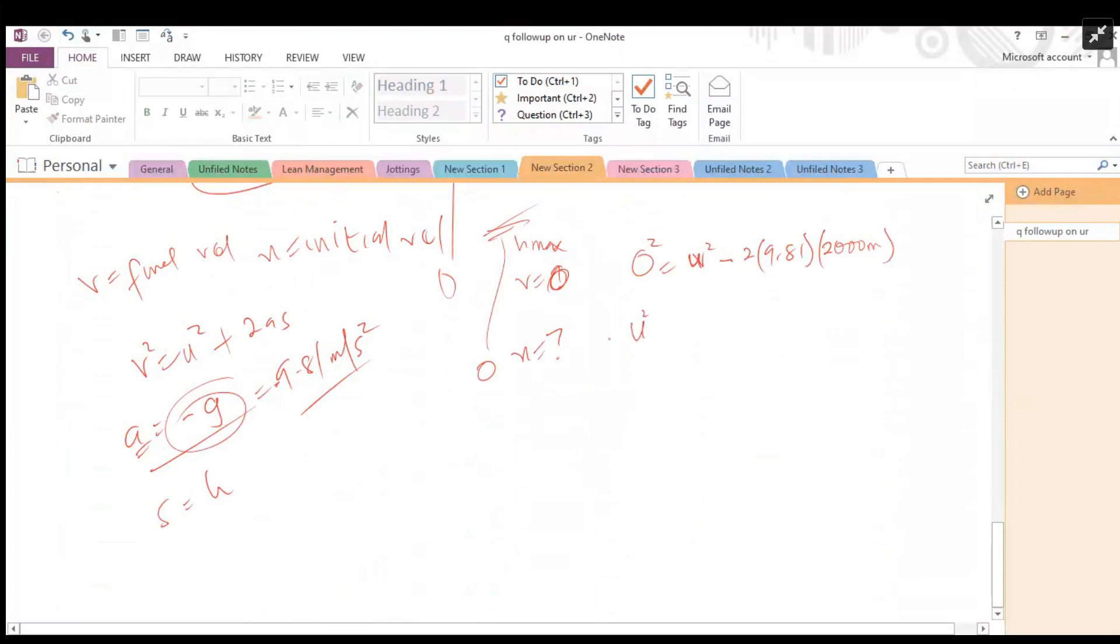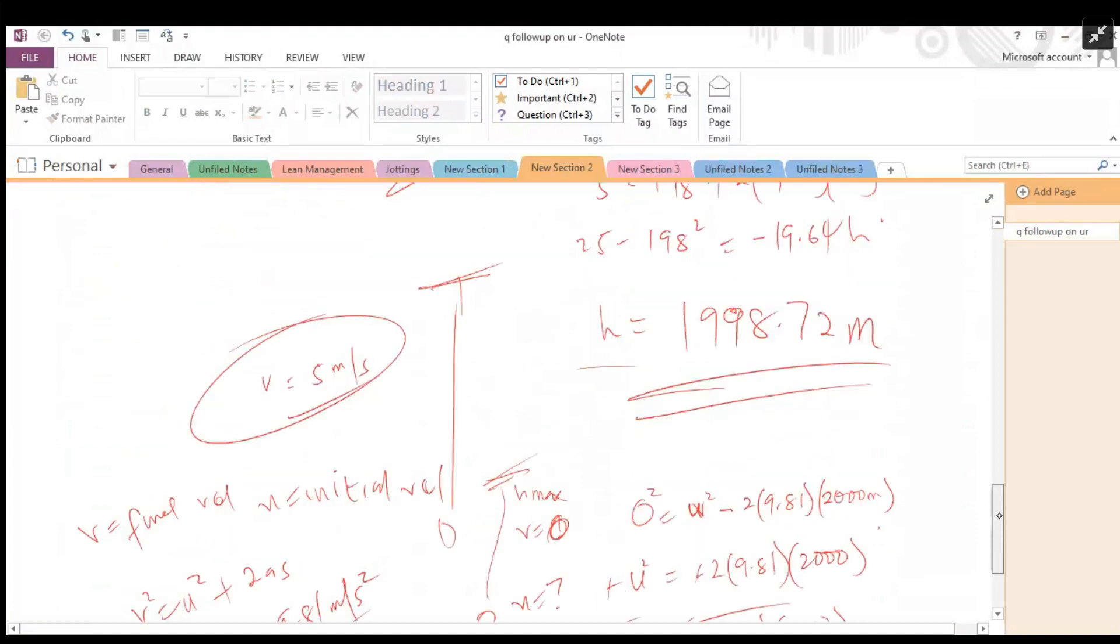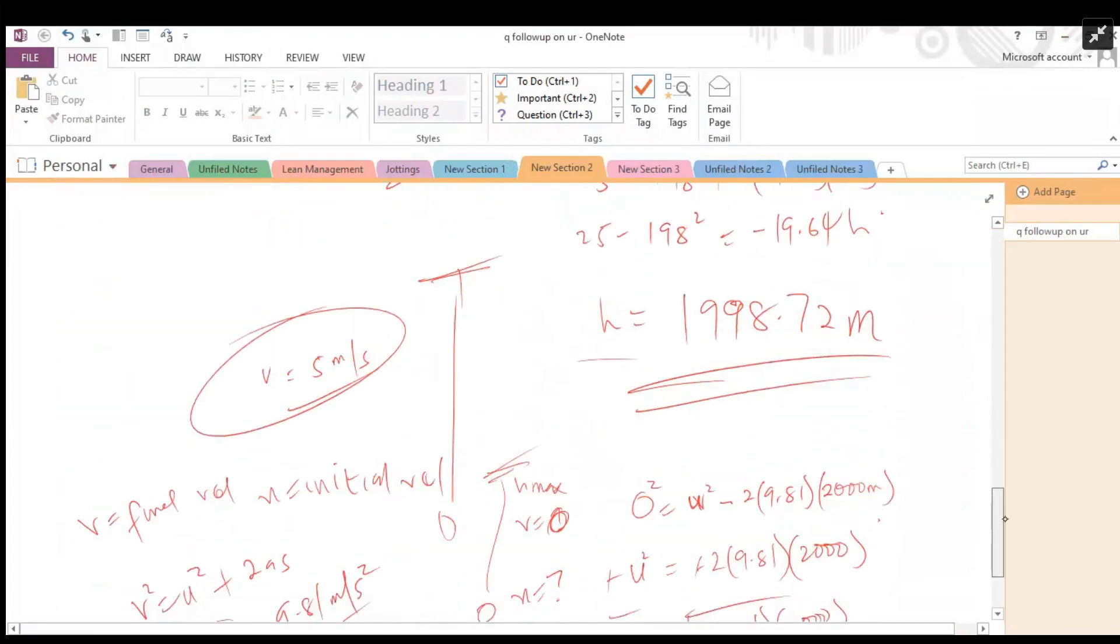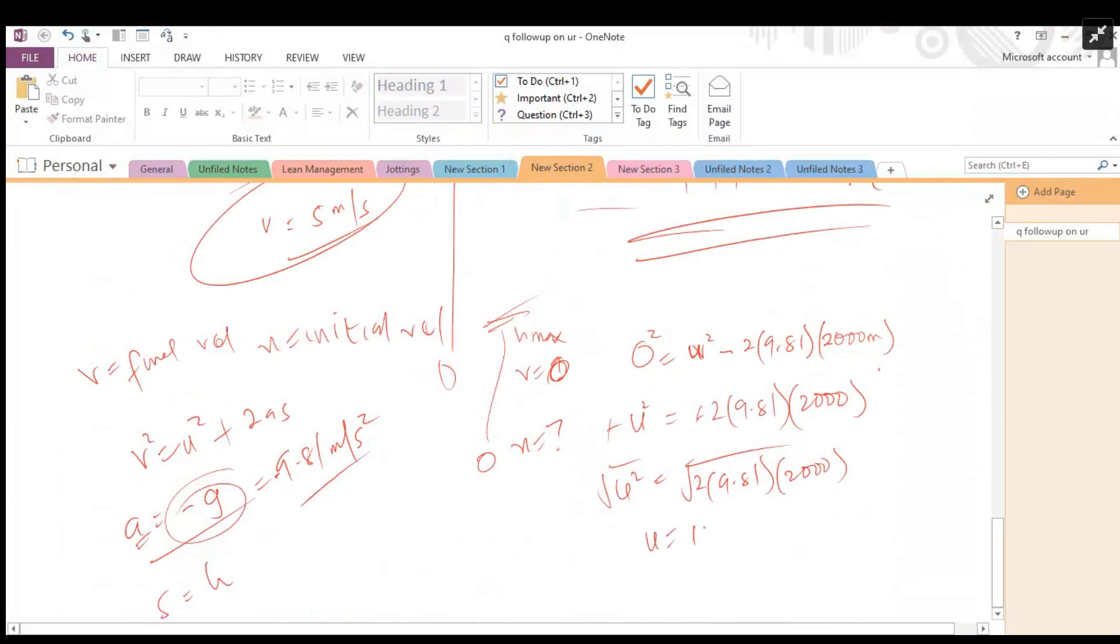So this is going to be -u² = -2 × 9.81 × 2000. Minus will cancel out minus. When we do the math, by the time you calculate, you get u = 198 meters per second.